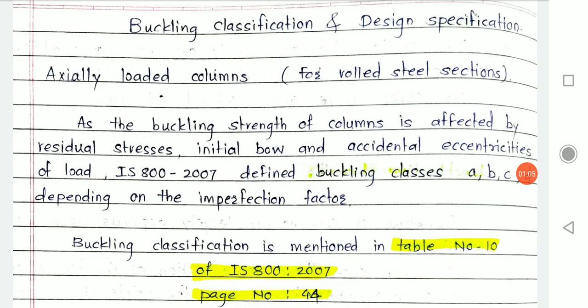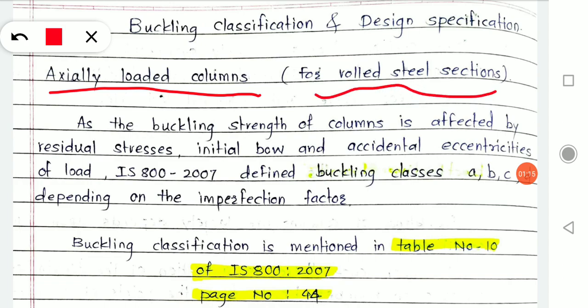Let's start with a few clauses from IS code. First, I'm taking axially loaded columns for rolled steel sections. Whenever I say compression member design, the compression member is one in which compression is applied axially. Whenever you design such a member, it mostly falls into the category of columns. So even designing a truss strut member somehow falls in the category of a compression member or column.